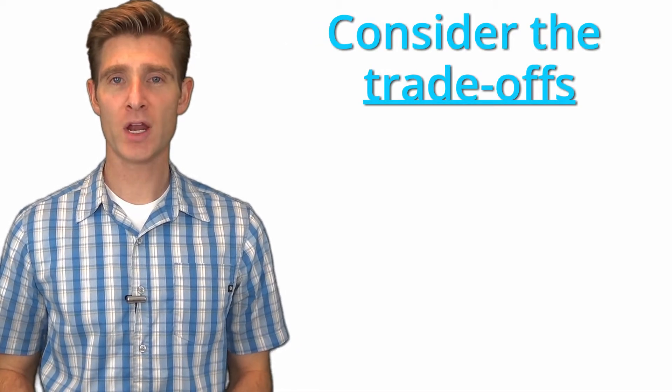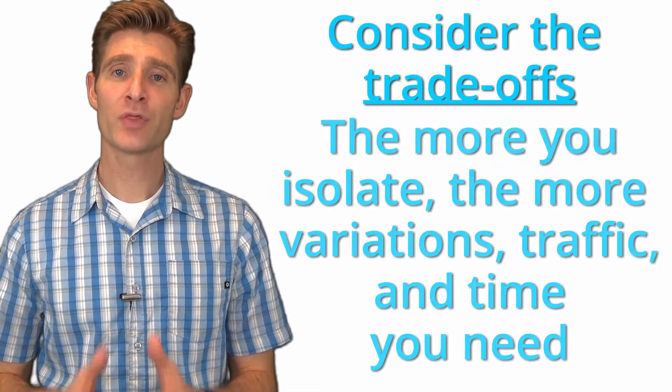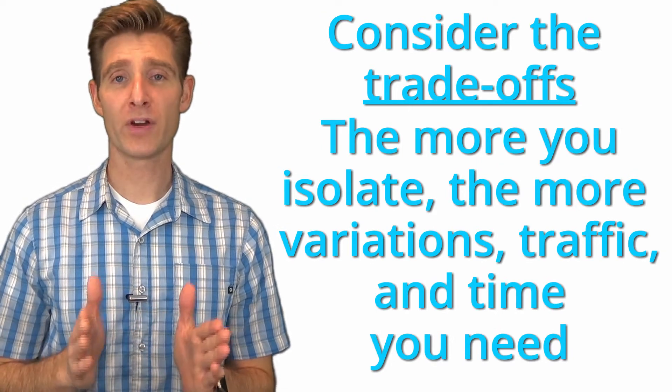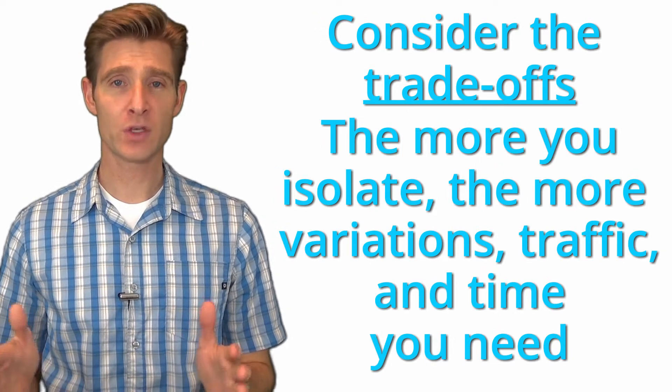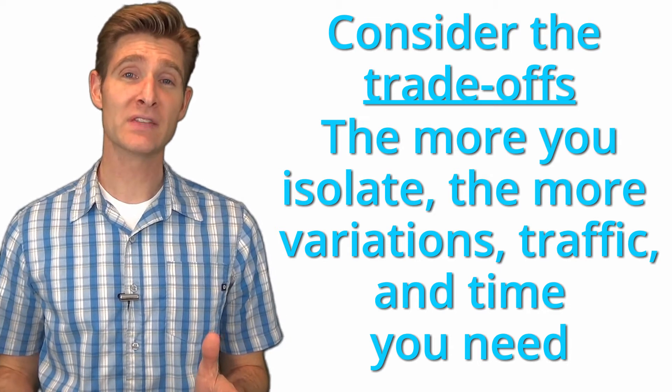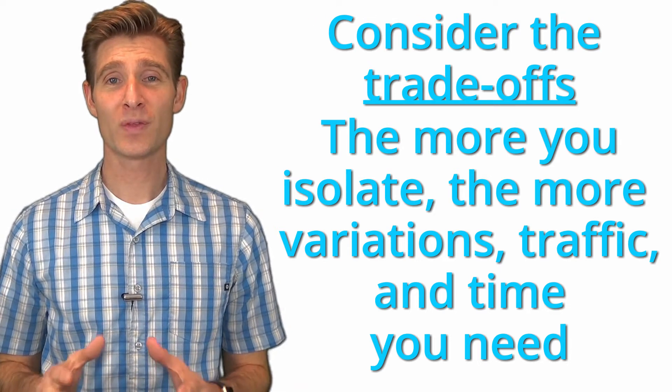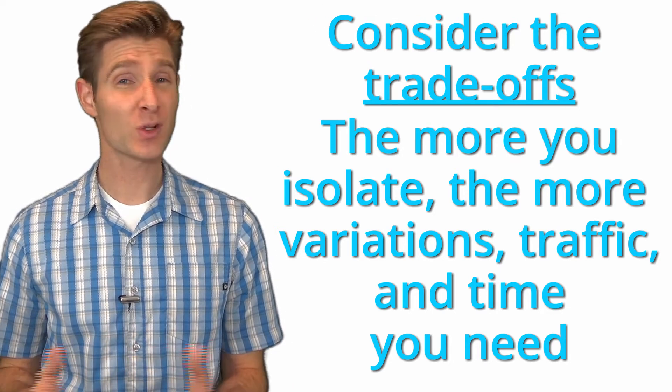The first principle to keep in mind is that there's a definite trade-off when isolating every variable. The more variables you isolate, the more variations you need. The more variations you need, the more traffic you need to get statistical significance. So the more isolation you do, the slower you go. You have to weigh that trade-off — if we don't recognize it exists, we've partly already failed.